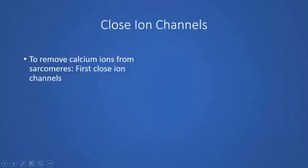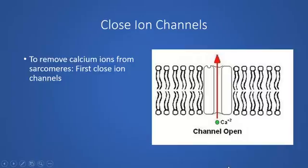To place the calcium ions back into the sarcoplasmic reticulum and allow the muscle to contract again later, the first thing that must happen is to close the ion channels through which the calcium originally left the sarcoplasmic reticulum. The membrane of the sarcoplasmic reticulum is similar in structure to the plasma membrane — a phospholipid bilayer with embedded proteins. When the protein is in its open shape, the pathway for calcium to move through and exit the sarcoplasmic reticulum is open, so the first step is to close those gates.